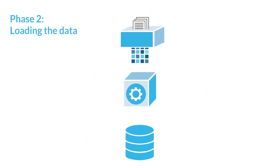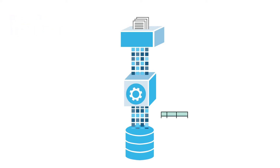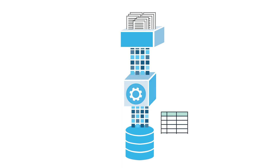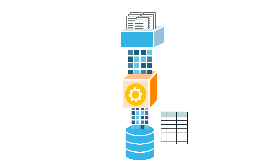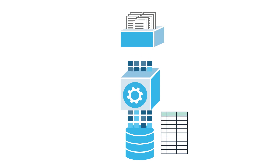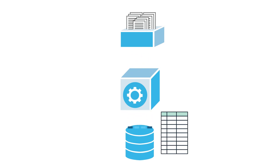Phase two requires a running virtual warehouse. The warehouse extracts the data from each file and inserts it as rows in the table. Warehouse size can impact loading performance. When loading large numbers of files or large files, you may want to choose a larger warehouse.